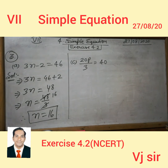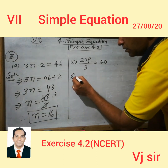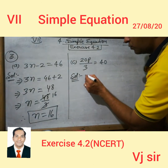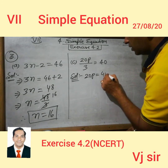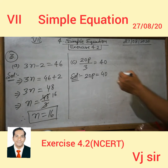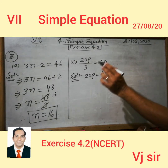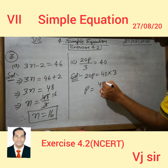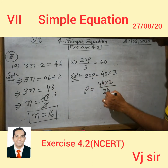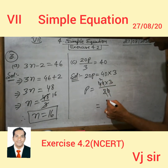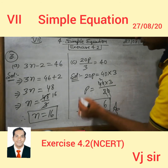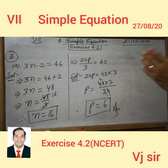Now we will solve this question. We will write the values which are on their own place. P is on its own place and 40 is on its own place. We will transfer C to the right-hand side as multiplication. The answer is 6, so the value of P is equal to 6. Clear? It is so simple.